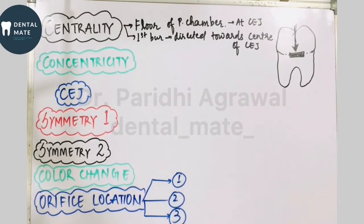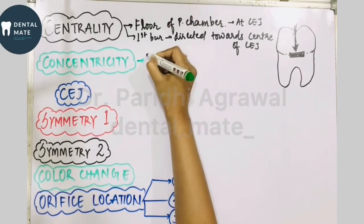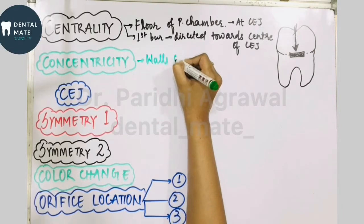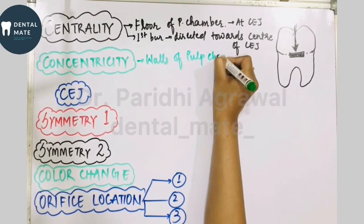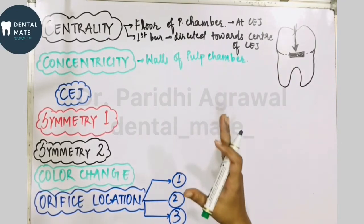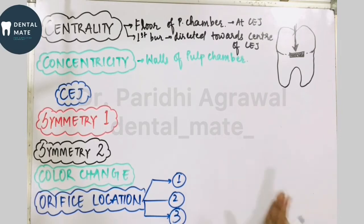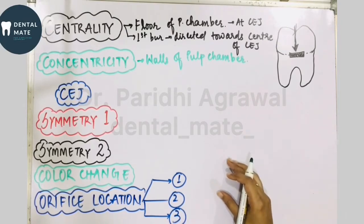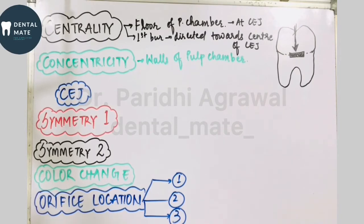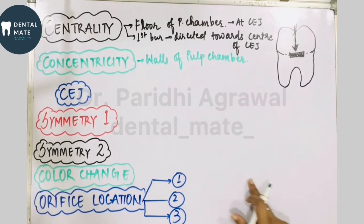The next law is the law of concentricity. Concentric means equidistant in all directions. The law of concentricity is used to locate the walls of the pulp chamber — whereas law of centrality was to locate the floor. According to this law, the walls of the pulp chamber are concentric to the external surface of the tooth at the level of the CEJ.